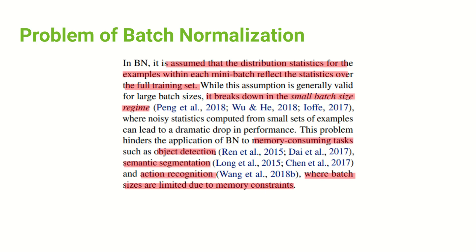We know that in 2015 batch normalization was introduced, addressing the internal covariance shift problem. I have another video talking about exactly that paper — please refer to it. It would be good to have the foundations of batch normalization before coming to the latest Cross-Iteration Batch Normalization technique. In brief, batch normalization needs a certain batch size to collect sufficient statistics to calculate the mean and variance for normalization.